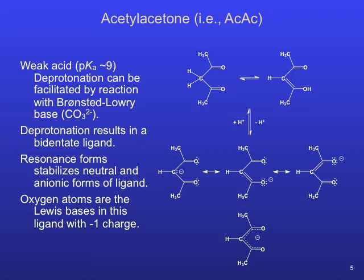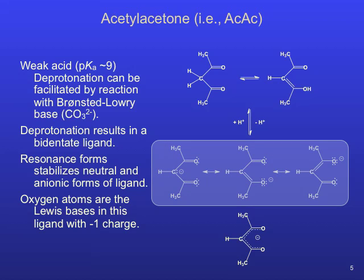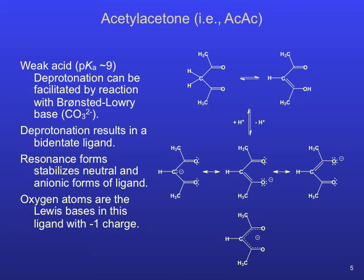Acetylacetone exhibits tautomerism and readily converts between the keto and enol structural isomers. This bidentate ligand can be deprotonated by a strong Lewis base, and several resonance forms of the resulting conjugate base stabilize this minus-1 anion. The Lewis base characteristics of this ligand result from the non-bonded electron pairs on each oxygen atom, which can be used to form dative bonds in a transition metal complex.